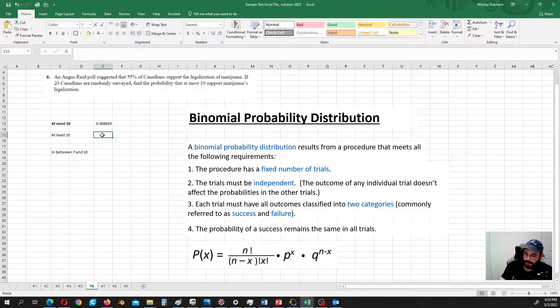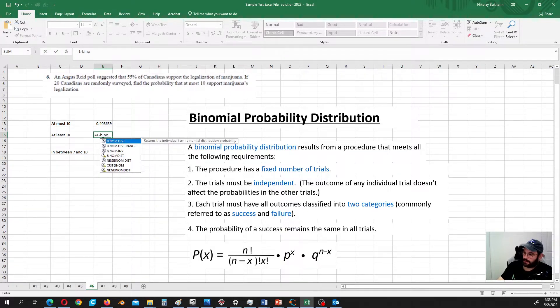So in this case we can just take 1 and subtract all the probabilities from 9 and to the left. So then we are going to be left with 10 and everything to the right.